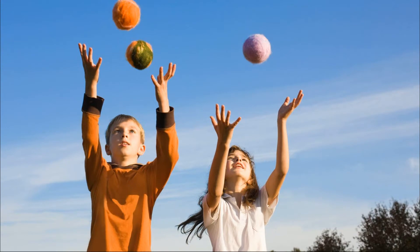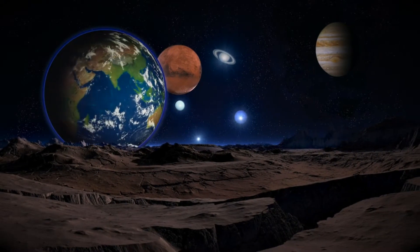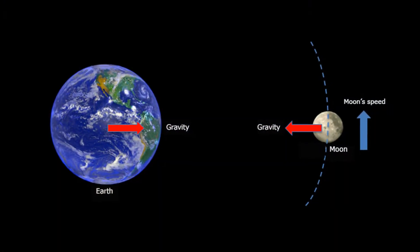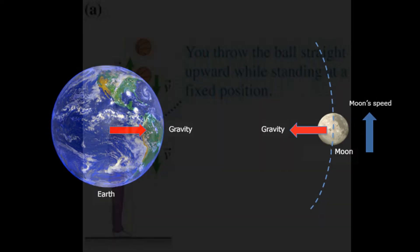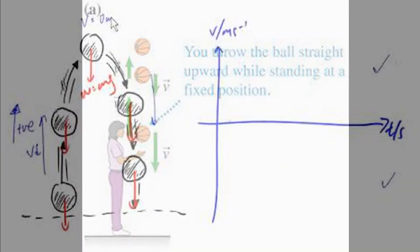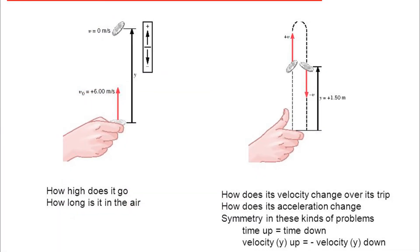Gravitational force: This is a pull or force of attraction exerted by one body on another. It is this pull of the sun that keeps the planets in orbit. The gravitational force of the earth attracts objects towards it. That is why the ball that is thrown up returns to earth. When the coin is released, it falls to the ground under the influence of gravitational force.